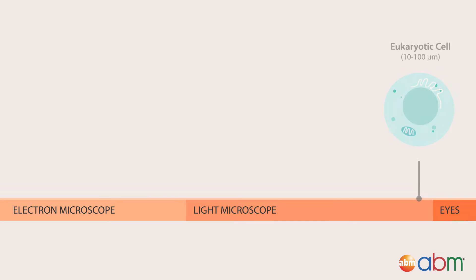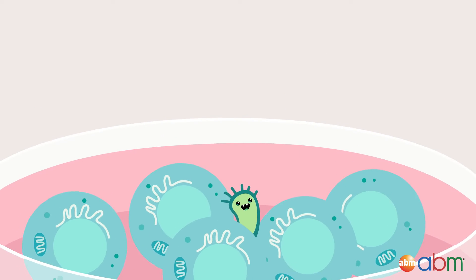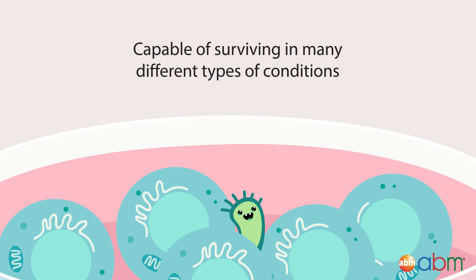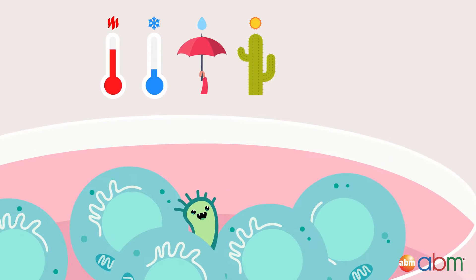Bacterial organisms are extremely small — smaller than the size of eukaryotic cells. This makes them difficult to detect under the microscope until the contamination is full-blown. Not only are they small, but they're also capable of surviving in many different types of conditions, whether it's hot or cold, or wet or dry, which makes them challenging to get rid of.